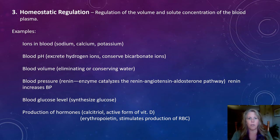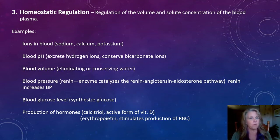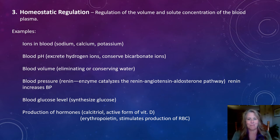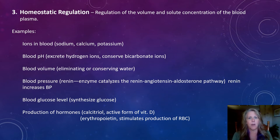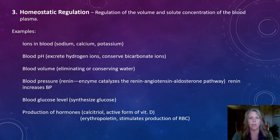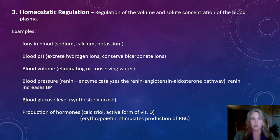Another example is blood pressure. We think of the heart as creating our blood pressure and blood vessels as helping to regulate it, but the kidneys do this as well. This might be a lesser known homeostatic function of the kidneys. They help regulate blood pressure through a hormone pathway called the renin-angiotensin-aldosterone pathway, which is hormone-driven and works to increase blood pressure when activated.